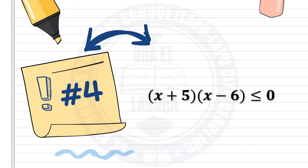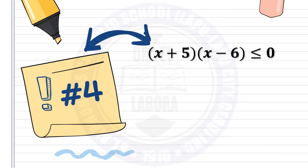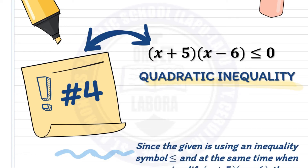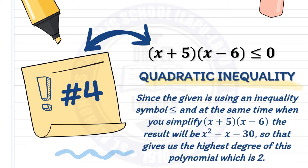Number 4: quantity x plus 5 times quantity x minus 6 is less than or equal to 0. This is an example of a quadratic inequality, since the given is using an inequality symbol less than or equal to, and when you simplify quantity x plus 5 times quantity x minus 6, the result will be x squared minus x minus 30, giving us the highest degree of this polynomial, which is 2.